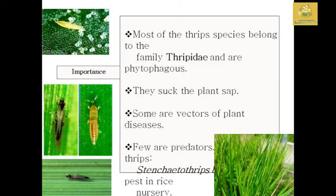Since they feed on plant sap, they can spread plant diseases as vectors. For example, Stenchaetothrips biformis is an important pest of rice.